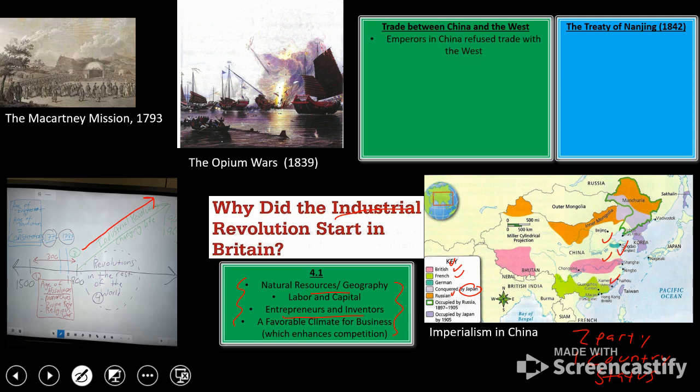Prior to 1793, just when the Industrial Revolution was really taking off — most people put it around 1750 — China had refused trade with the West. China, whose actual name Zhongguo means Middle Kingdom, held the belief that it was the center of the world and that it didn't need to travel beyond its borders to get anything it actually needed.